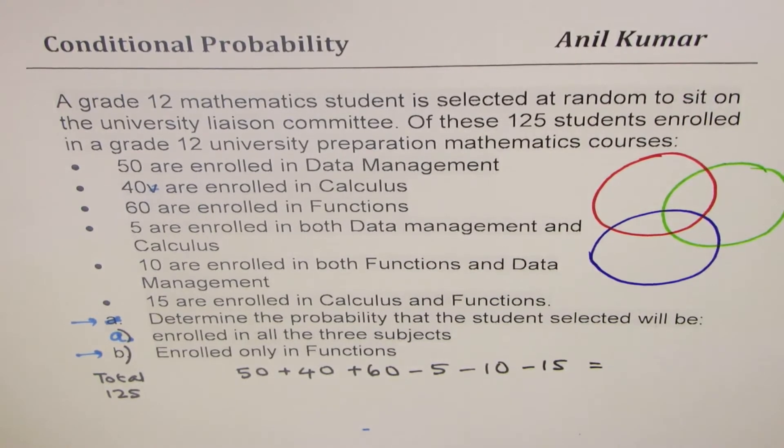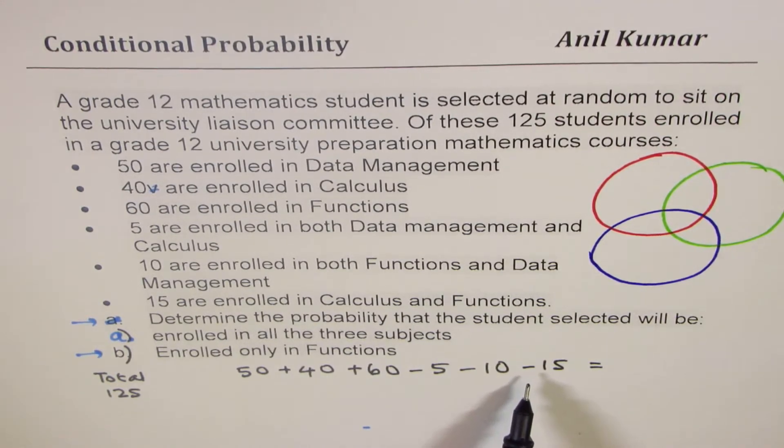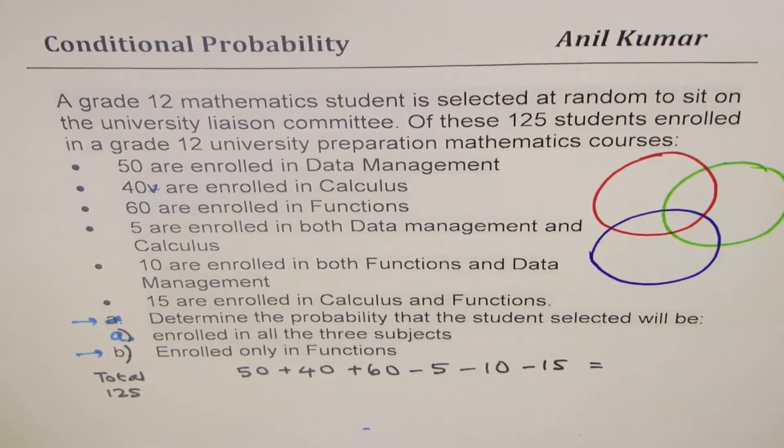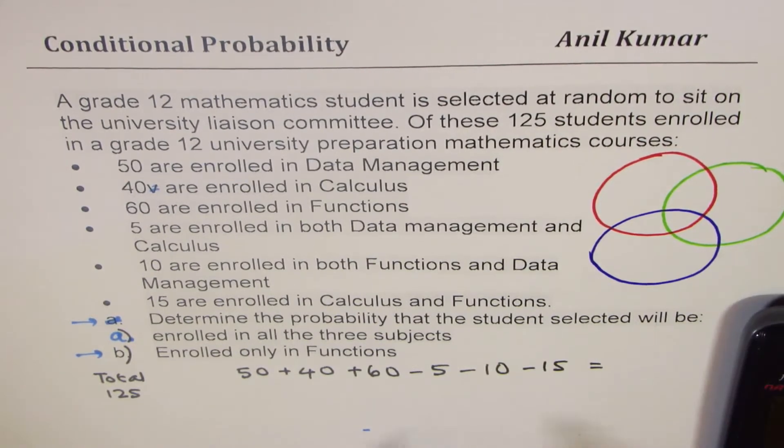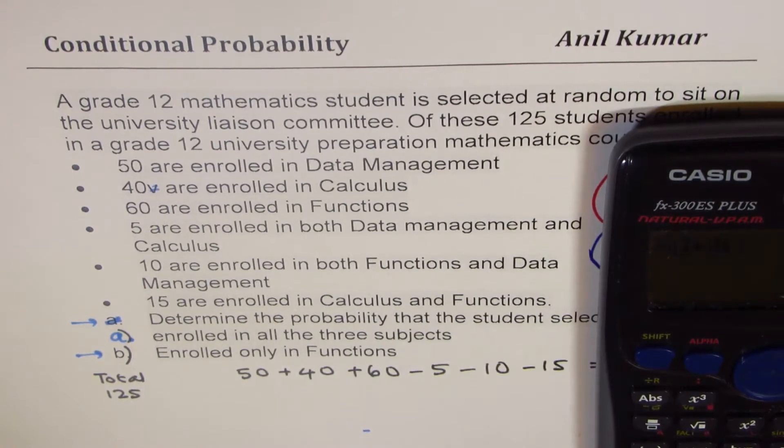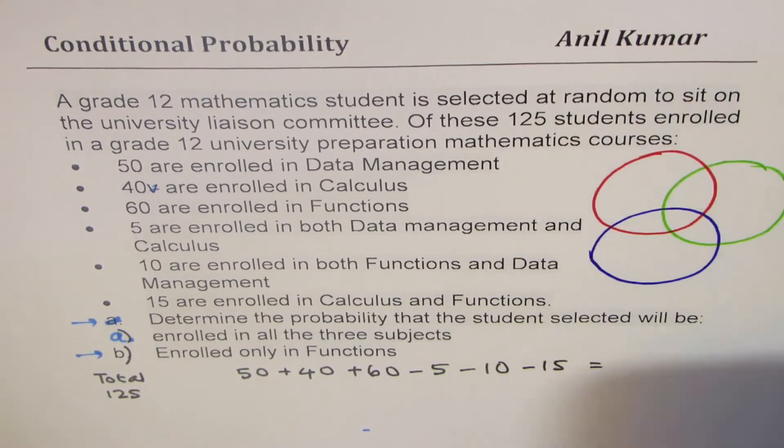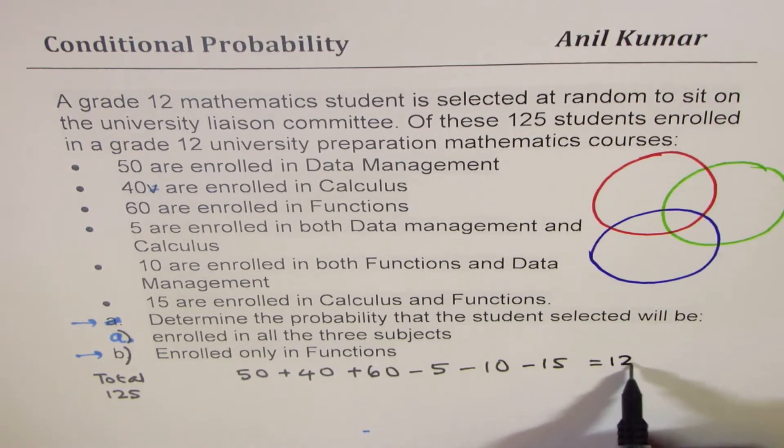How much do we get? Let's see. We have 150, and we are taking away 30. So if we do this calculation, we get 120. So, let's do this. We have 50 plus 40 plus 60, which is 150. Take away 5, take away 10, take away 15, which is 120.